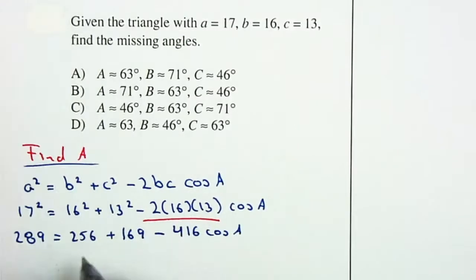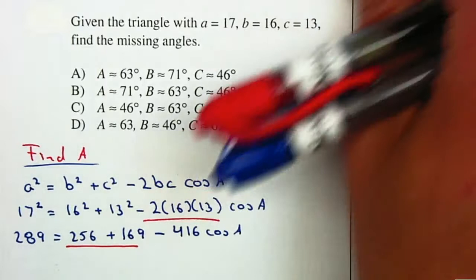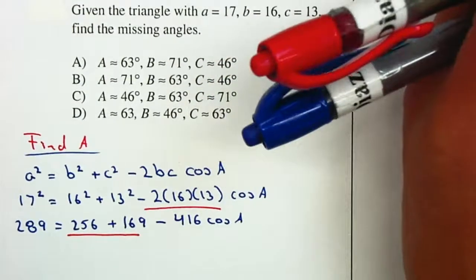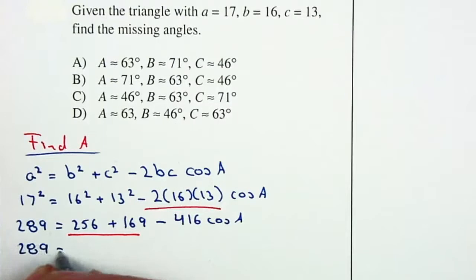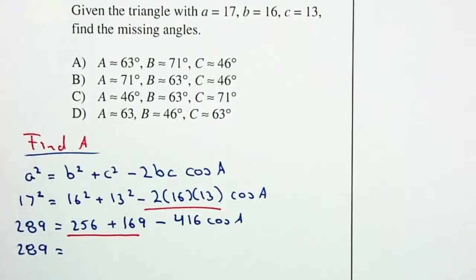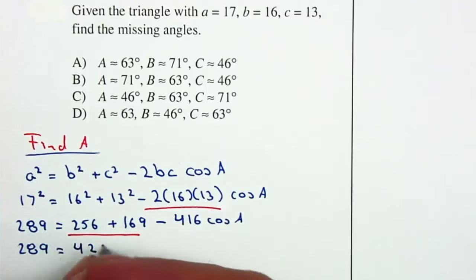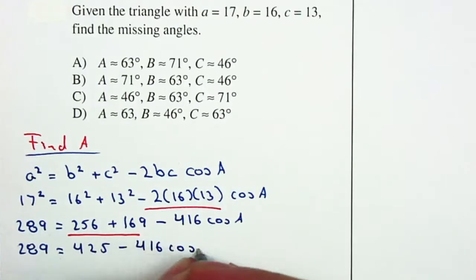Remember, you can only add those two numbers. This is multiplied by the cosine of A, therefore you cannot add it. That gives me 289 = 256 + 169 = 425 minus 416 cos A.